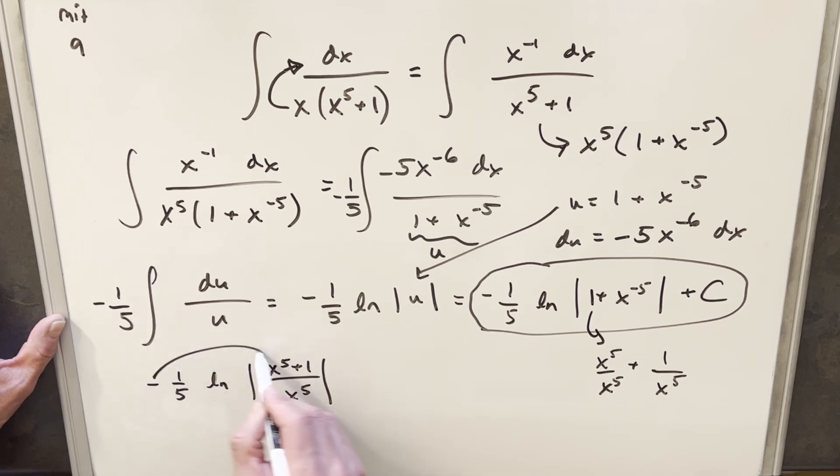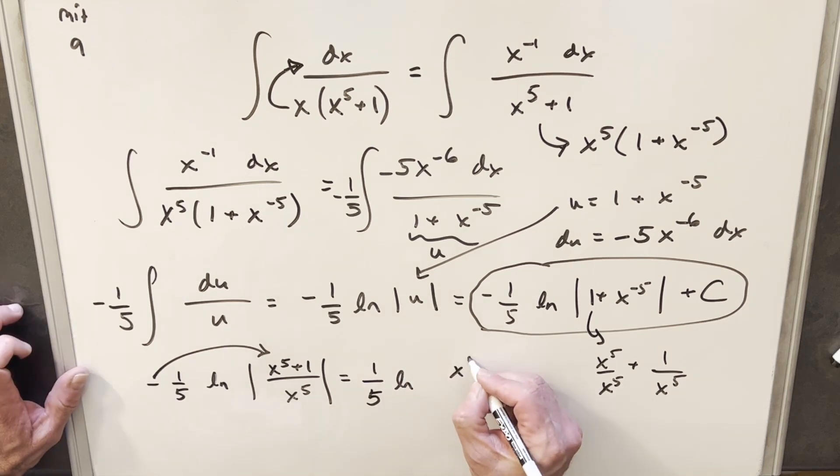One last thing we're going to do is I'm going to take this minus sign and use it as an exponent in the natural log and then use it to flip it and get the reciprocal. So for their answer, they have 1 over 5 natural log x to the 5 over x to the 5 plus 1.